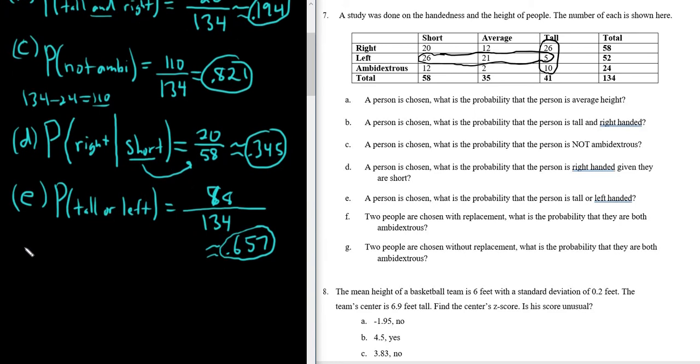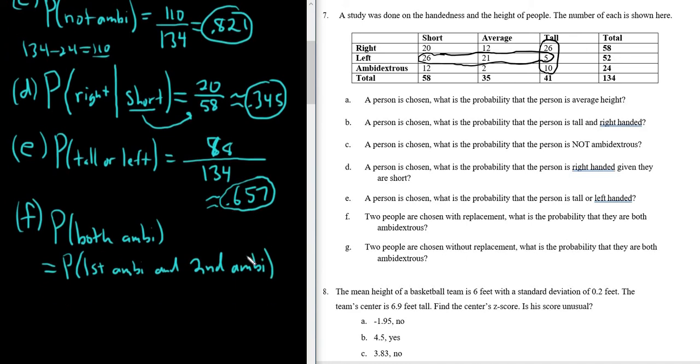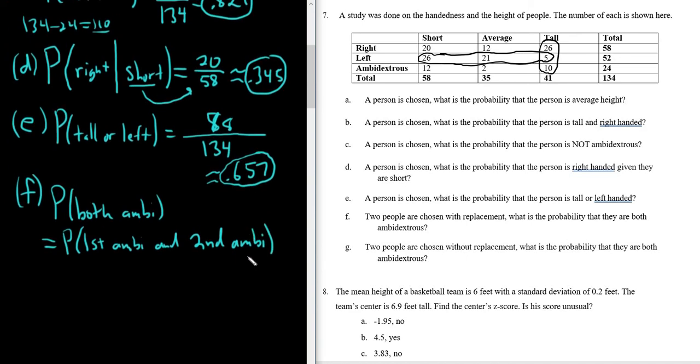Part F. Let's see what F is. Two people are chosen with replacement. Okay, so that means you take a person, you look at them, then you put them back, and then you take another person. What is the probability that they are both ambidextrous? So we want two people to be ambidextrous. So both ambi. So if they're both ambi, that means the first is ambi and the second is ambi. Because they're both ambidextrous. The first is ambi and the second. So now this is where we use the multiplication rule.